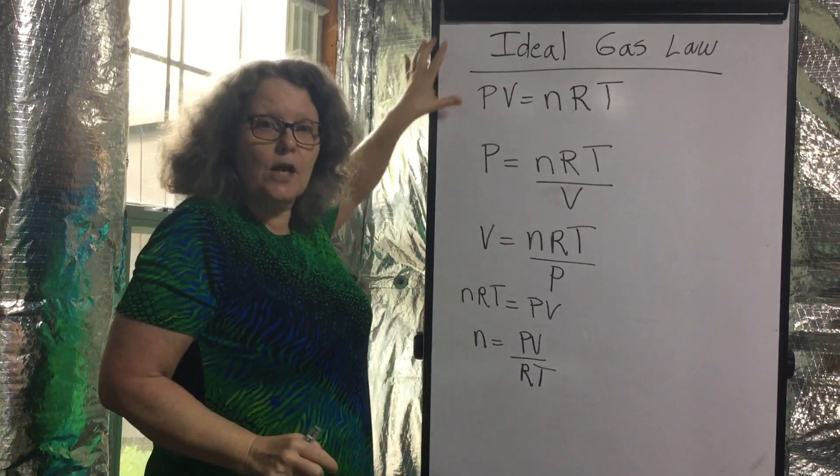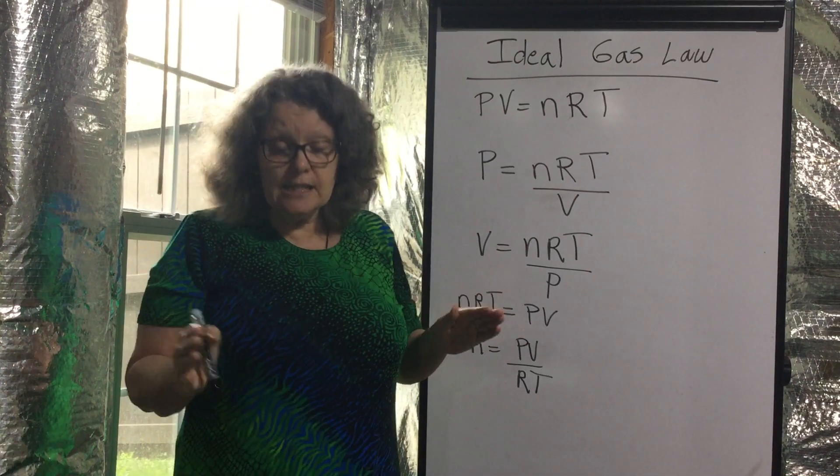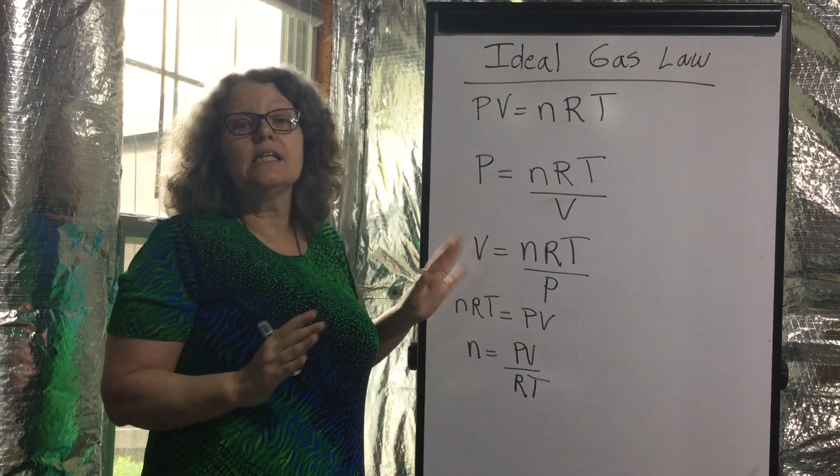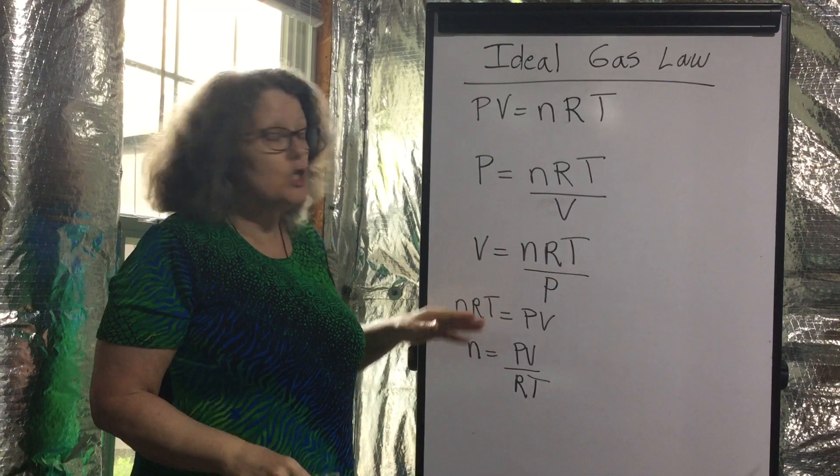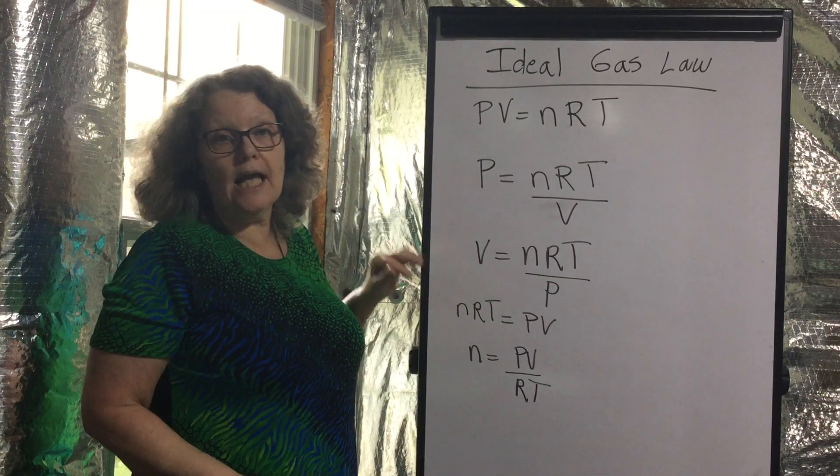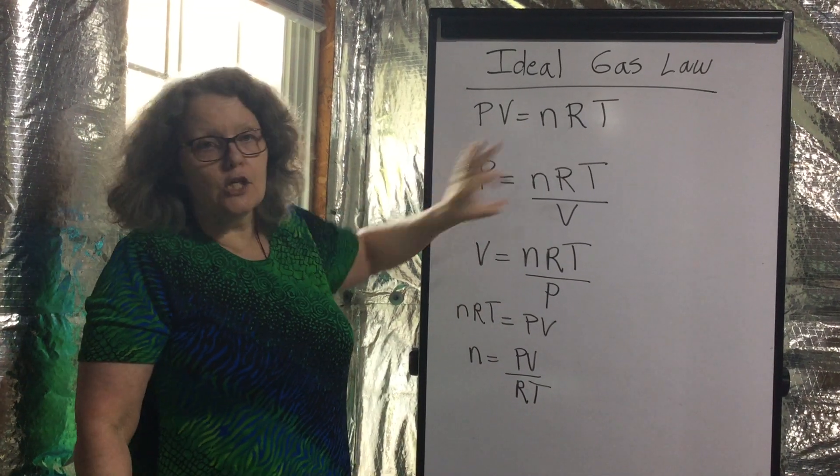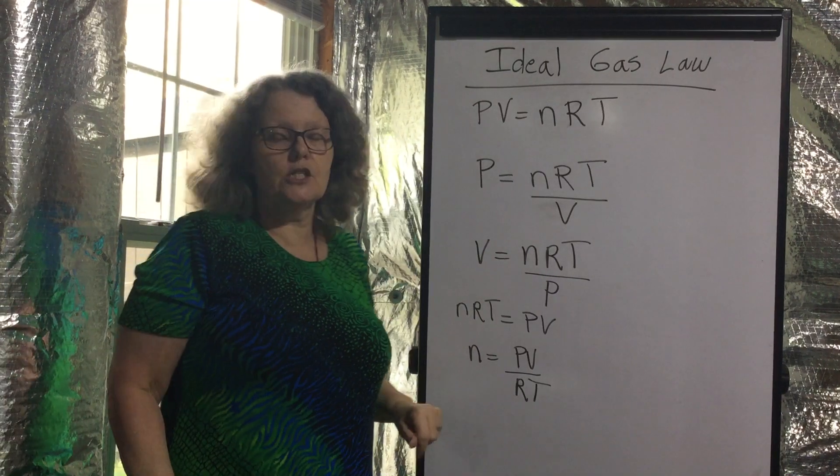So that's the next thing I want you to do. And then, just like you did with your combined gas law, have it in a separate note page. Have it marked ideal gas law: P equals NRT over V, V equals NRT over P.